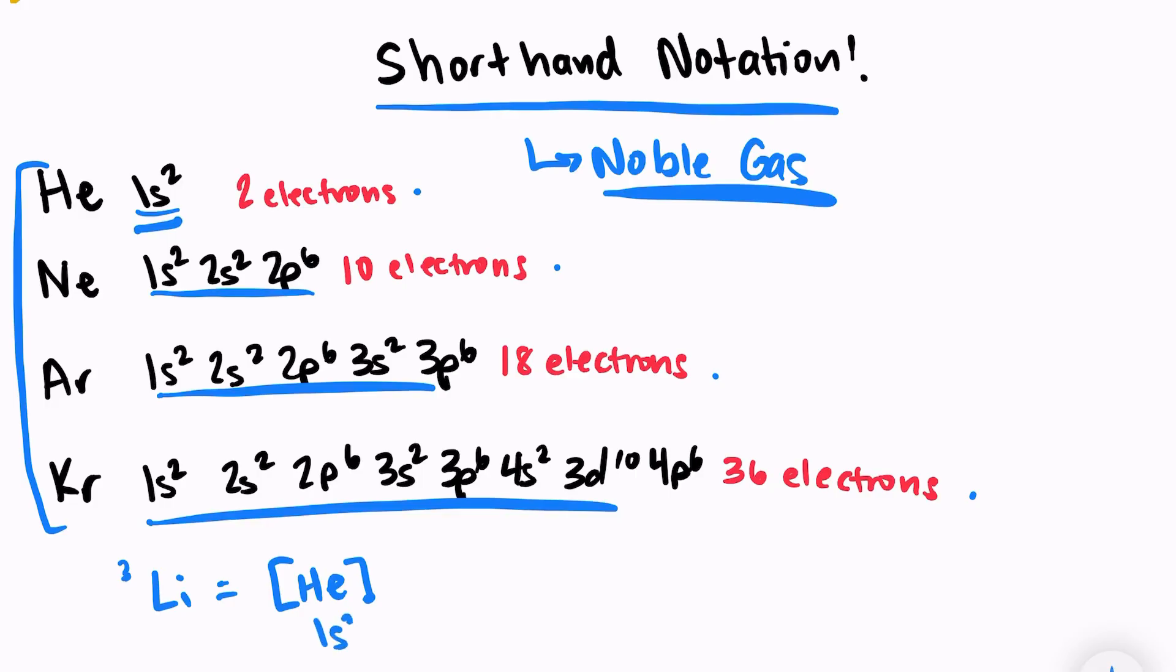Instead of writing 1s2 here, I just wrote helium. And then after that, I would put 2s1. So I have two electrons plus one electron is three electrons, which is just what I wanted.